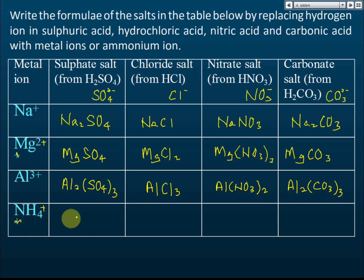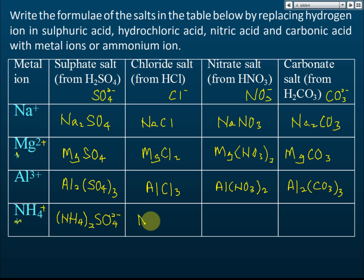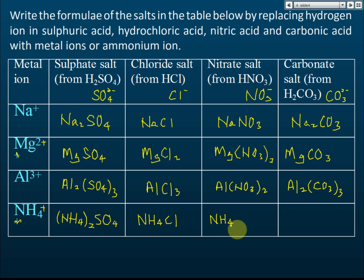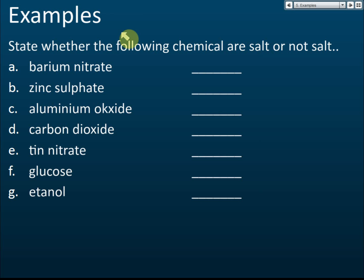For ammonium salts: ammonium sulfate is (NH₄)₂SO₄ — brackets are needed because sulfate has a 2⁻ charge while ammonium has only a 1⁺ charge, so two ammonium ions are required. Ammonium chloride is NH₄Cl. Ammonium nitrate is NH₄NO₃. These are the chemical formulas for the main salt examples.